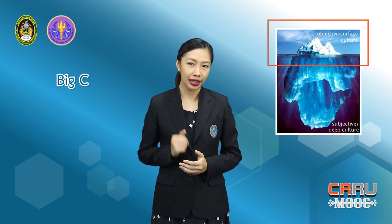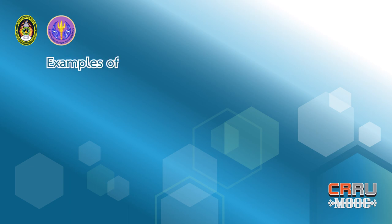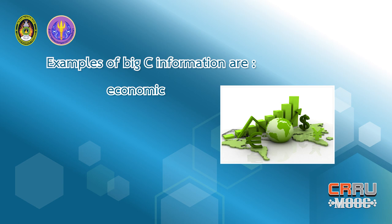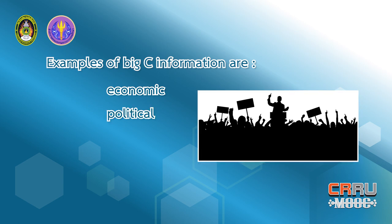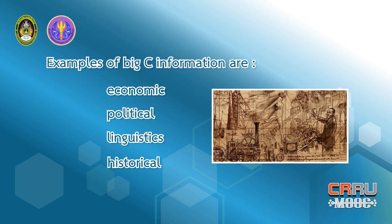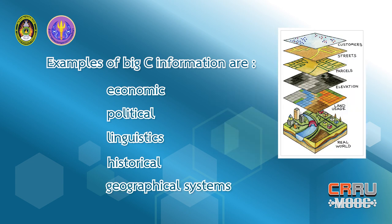First, big C is an objective culture or obvious culture. This level of culture is formally learned and consciously shared. It emphasizes the information produced by institutions to functionally organize their society. Examples of big C information are economic, political, linguistics, historical, and geographical systems.